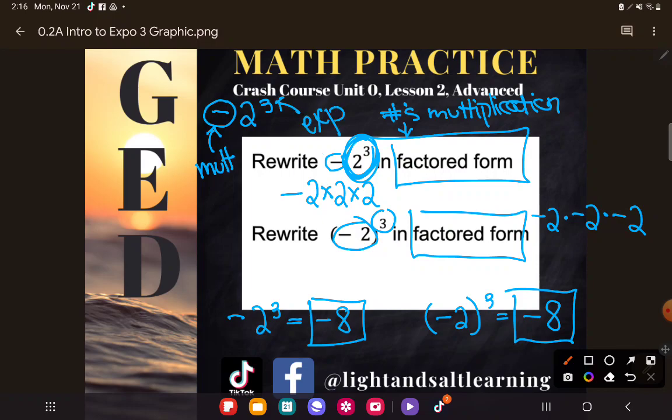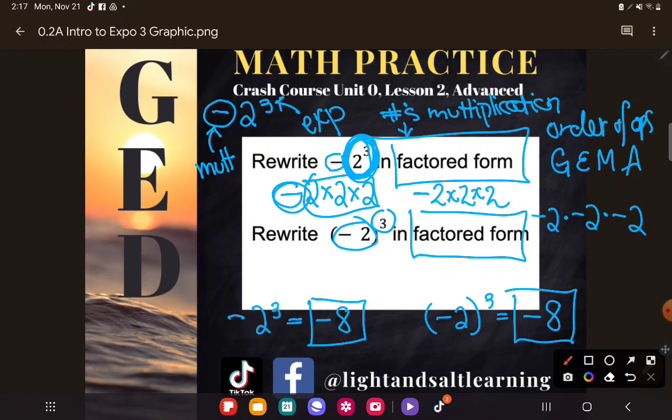And when we look at the order of operations, the order of operations says we're supposed to do any groupings, then exponents, then multiplication and division, and then addition and subtraction if we were simplifying. And so we can see that here. We would be doing the exponent 2³ before we do the negating, the subtracting. So all that to say, -2³ without the parentheses in factored form is the opposite of 2 × 2 × 2. It just has one minus sign in it.